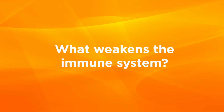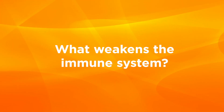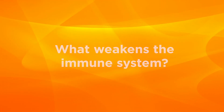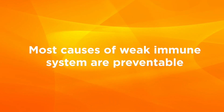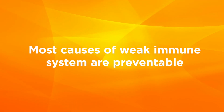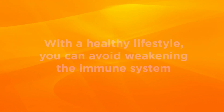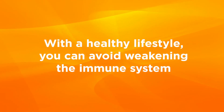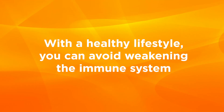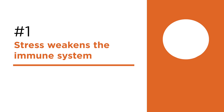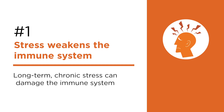What weakens the immune system? Aside from immune system diseases, most of the causes of a weak immune system are preventable, like stress, lack of sleep, and alcohol intake. If you can maintain a healthy lifestyle, you can avoid many circumstances that weaken the immune system. Number one: stress. According to researchers, long-term chronic stress can damage the immune system.